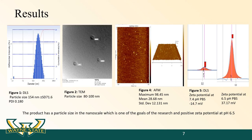DLS data demonstrates the change in zeta potential from minus 14.7 to plus 37.17 mV between physiological pH and tumor pH.